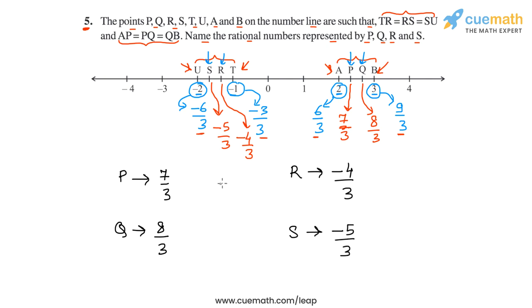So these are the answers for this question. P represents 7 by 3, Q represents 8 by 3, R represents minus 4 by 3, and S represents minus 5 by 3. So with this, we have completed question number 5.